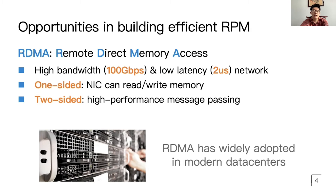RDMA is an advanced network feature that has high bandwidth and low latency. Besides interfaces compatible with traditional networking primitives, which is known as two-sided RDMA, RDMA also provides a new hardware primitive: the one-sided primitive. With this primitive, the NIC can directly read and write server memory, bypassing the server CPU.